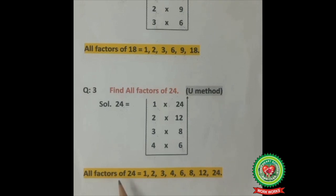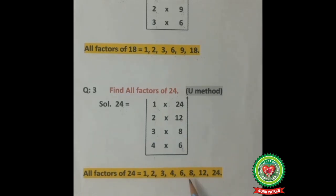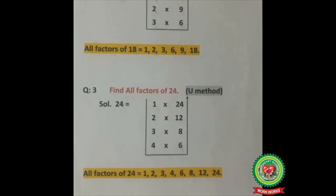So all factors of 24 are: 1, 2, 3, 4, 6, 8, 12, and 24. Today we have learned how to find all factors of a number, and I hope you are now able to do the related worksheet sent in your Snap Homework. Before starting the worksheet, please go through the YouTube links already sent to you on Snap Homework. Have a nice day. Thank you.